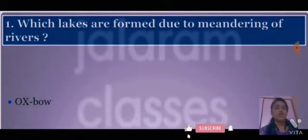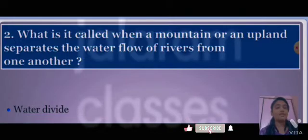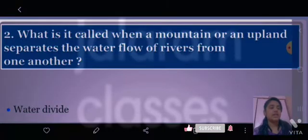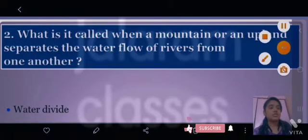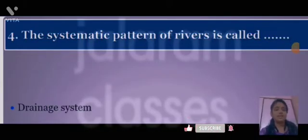The first question is: which lakes are formed due to the meandering of rivers? Answer: oxbow lakes. Second: what is it called when a mountain or an upland separates the water flow of rivers from another? Answer: water divide. Next: the systematic pattern of rivers is called the drainage system.